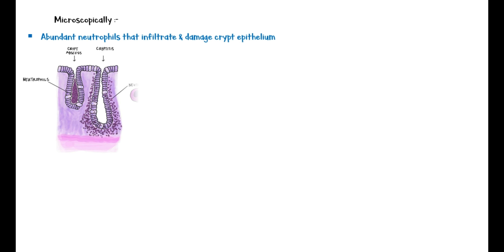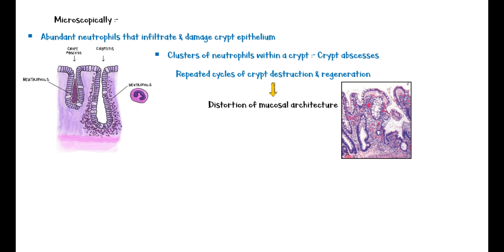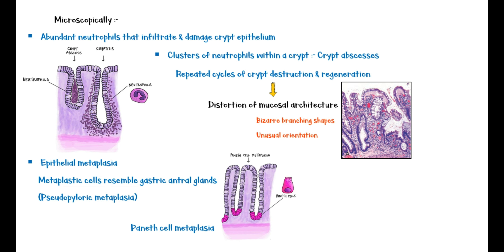Microscopic features of active Crohn's disease include abundant neutrophils that infiltrate and damage the crypt epithelium. Clusters of neutrophils within a crypt are known as crypt abscesses and are often associated with crypt destruction. Repeated cycles of crypt destruction and regeneration lead to distortion of the mucosal architecture, with normally straight and parallel crypts taking on bizarre branching shapes and unusual orientations. Epithelial metaplasia is another complication of chronic relapsing injury; metaplastic cells resemble gastric antral glands, known as pseudopyloric metaplasia. Paneth cell metaplasia may also be seen, mainly in the left colon where Paneth cells are usually absent.